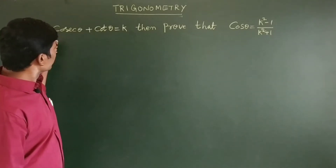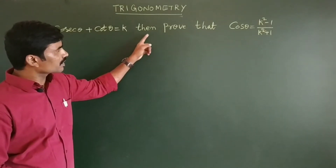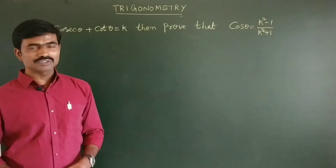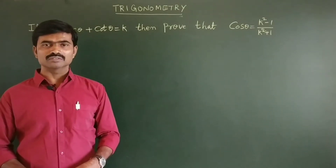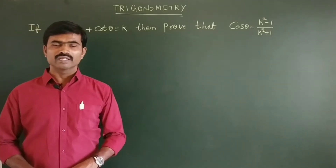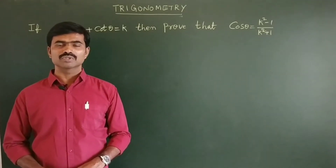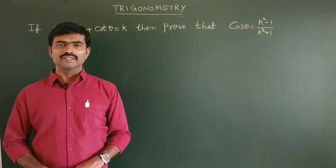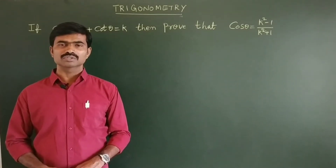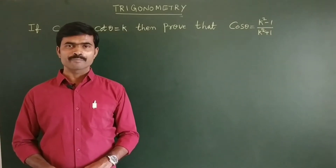The problem is: if cosecant theta plus cot theta is equal to k, then prove that cos theta is equal to k squared minus 1 by k squared plus 1. This depends on trigonometric identities. The trigonometric identities are: sine squared theta plus cos squared theta is equal to 1, and cosecant squared theta minus cot squared theta is equal to 1, and secant squared theta minus tan squared theta is equal to 1.